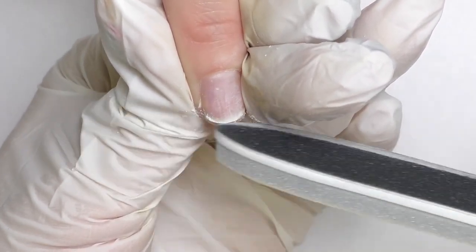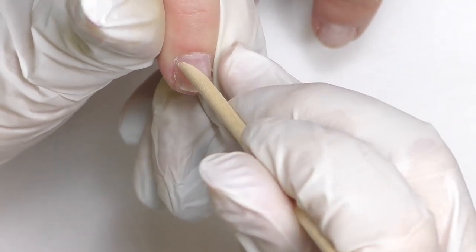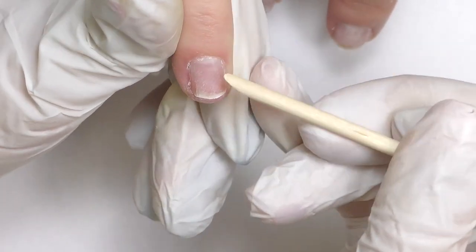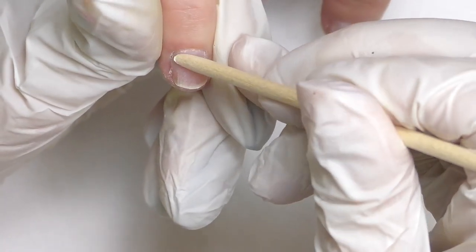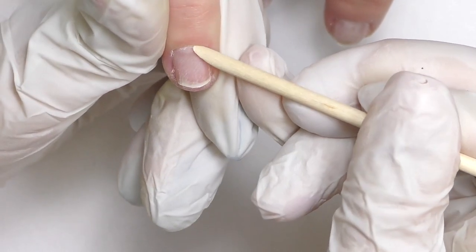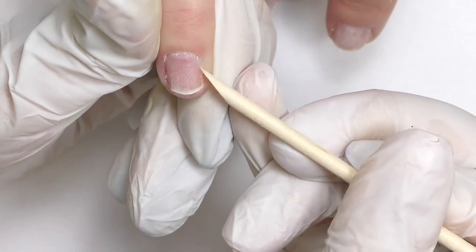After that, I am going to push back the cuticles. You can do it with a pusher or with the orange wood stick as I do, because this is a single-use tool. You just throw it away or just give it to your client when you're done.